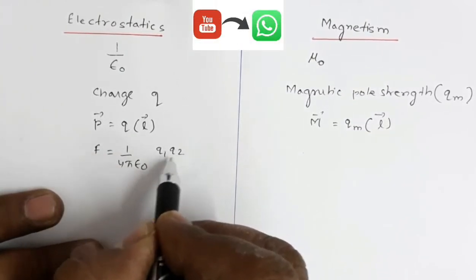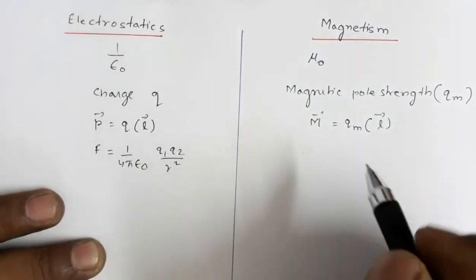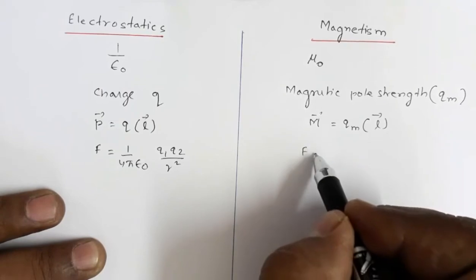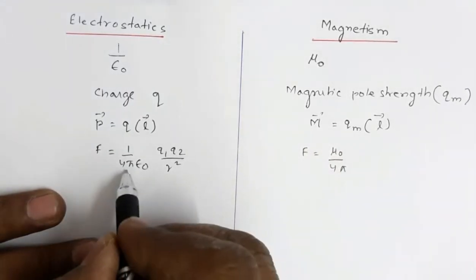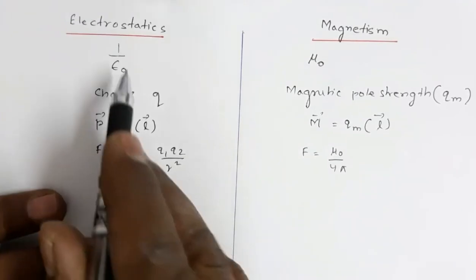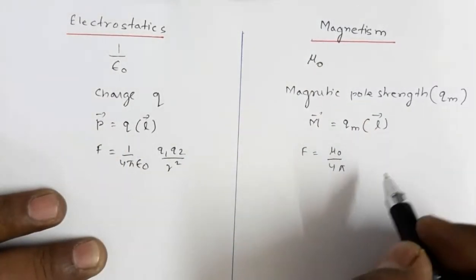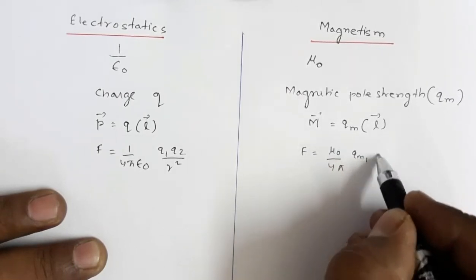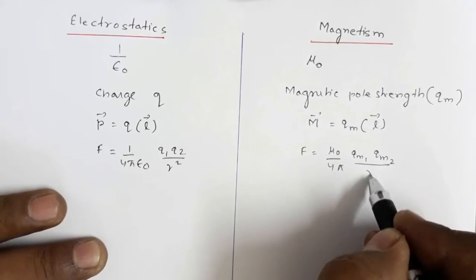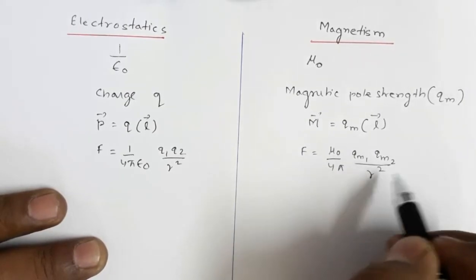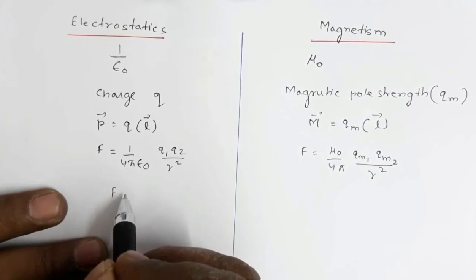The force between charges is given by (1/4πε₀) × q₁q₂/r², where the charges are separated by distance r. The analogous force between magnetic poles is (μ₀/4π) × Q_M1·Q_M2/r², where 1/ε₀ is replaced by μ₀.